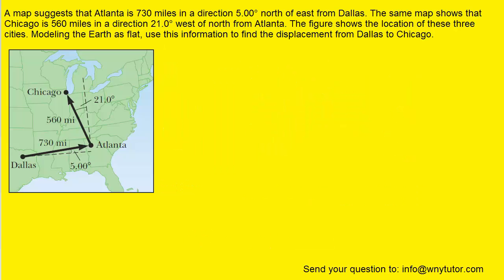If you haven't done so yet, please pause the video and try to answer this question on your own before listening on. In order to find the resulting displacement from Dallas to Chicago, we want to break our journey up into two segments: one from Dallas to Atlanta, and then the other from Atlanta to Chicago. So let's go ahead and set up a little table to do that.